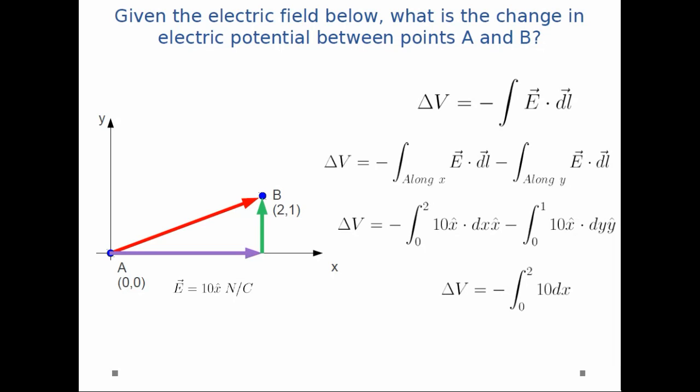The x-hat dot y-hat in the second expression cancels out to zero. So I'm just left with 10 dx integrated from zero to two. When I do that integration, I get minus 20 volts.